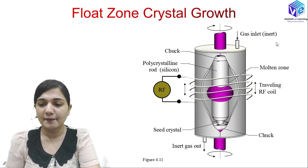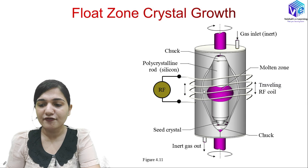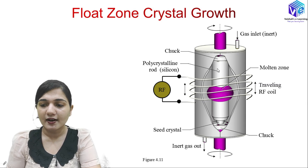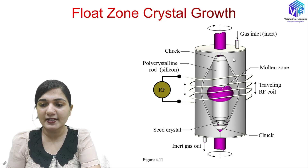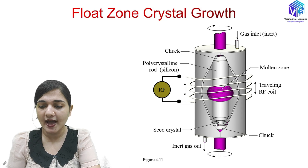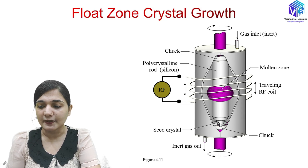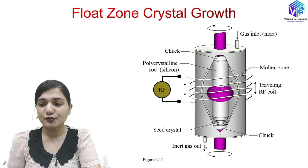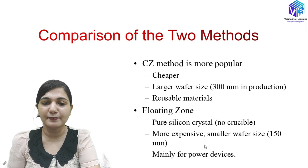Here is a better view of the floating zone method. You can see the traveling RF coil, which travels in the upward direction. Inert gas is introduced inside. The seed crystal is at the downside and acts as the starting material, with gas also exiting the chamber. This is how the floating zone technique operates.